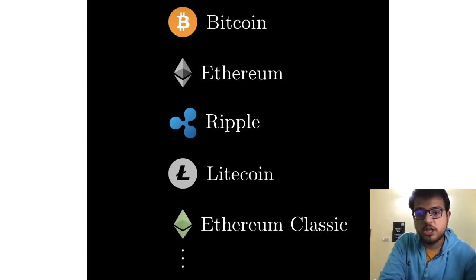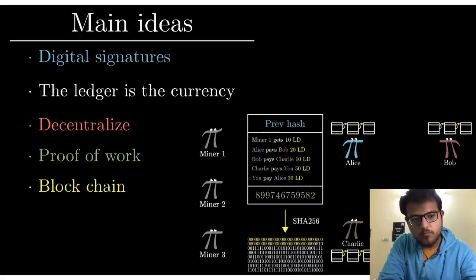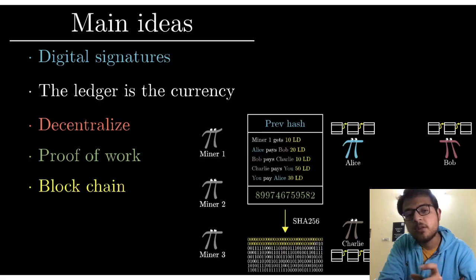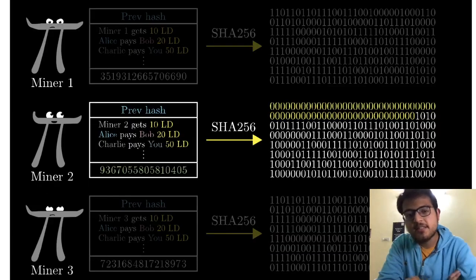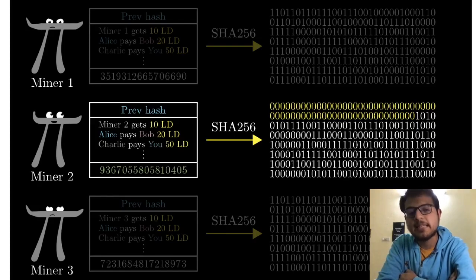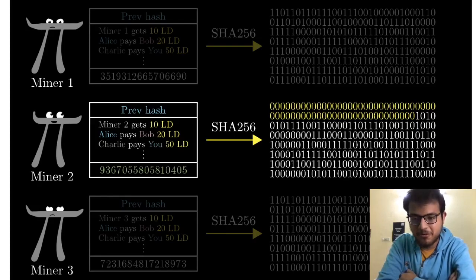We're going to focus on the basic idea of blockchain — how the block and the chain, two parts of it, come together. The main ideas that are going to be covered in depth are: digital signatures, second the ledger is the currency, third is decentralization, fourth is proof of work, and fifth is blockchain — how it is being used today. We're going to break it down into very simple components and start with a very simple example of a few friends trying to get their finances sorted out.